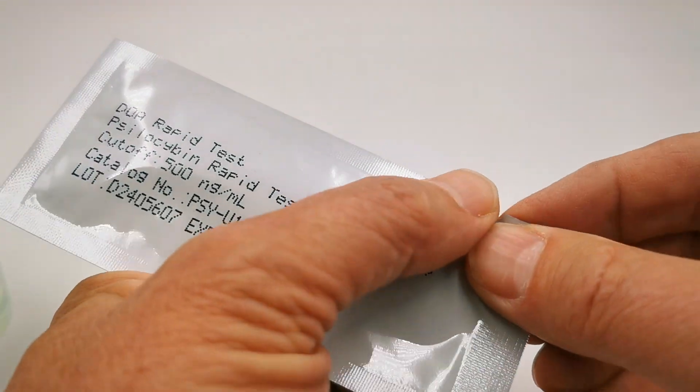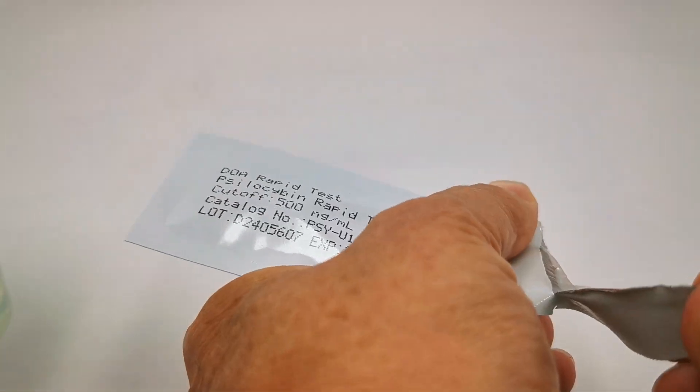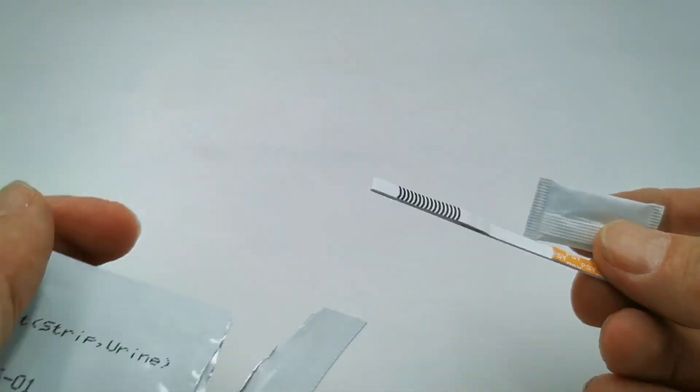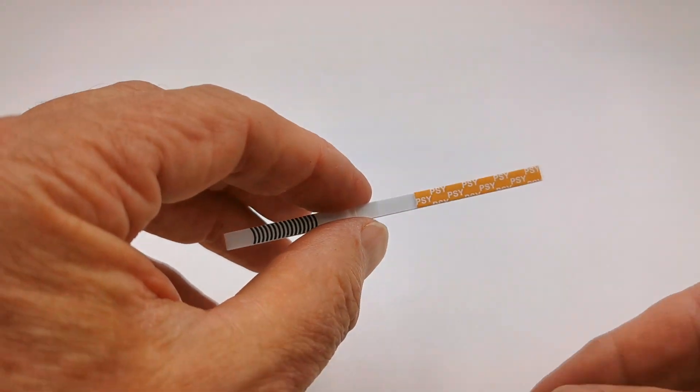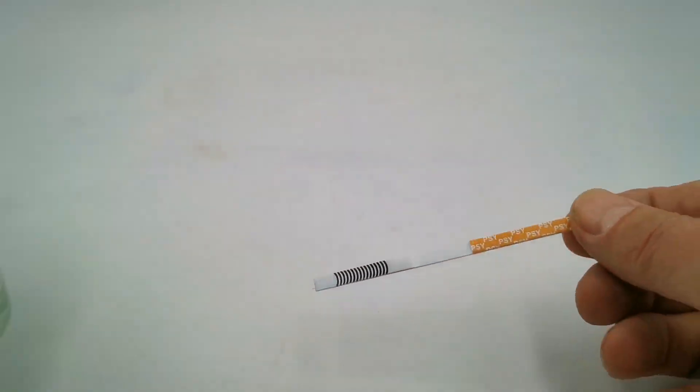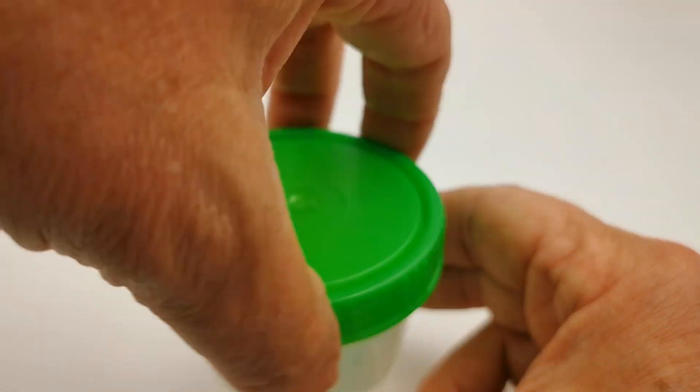When you're ready to do the test, open the foil and inside we should have a psilocybin test strip with PSY on the handle and the foil pouch of desiccant which is to keep the test strip dry.